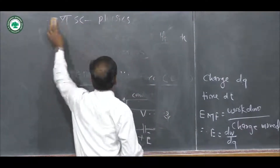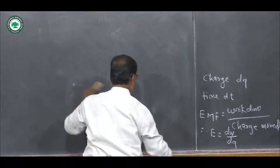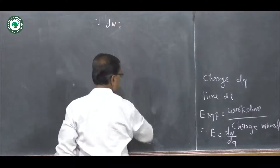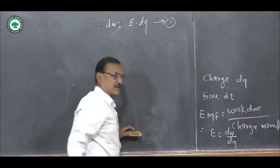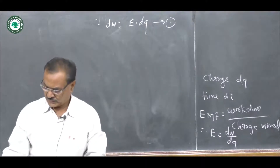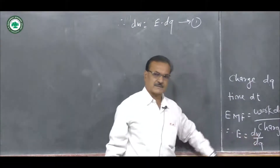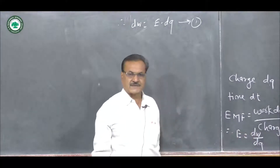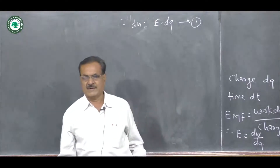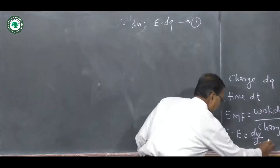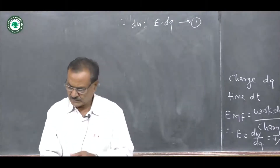We can rearrange the terms. The SI unit of work is joule, and the SI unit of charge is coulomb. Therefore, the SI unit of EMF is joule per coulomb.